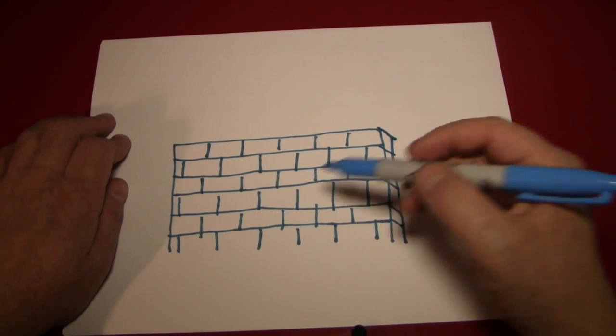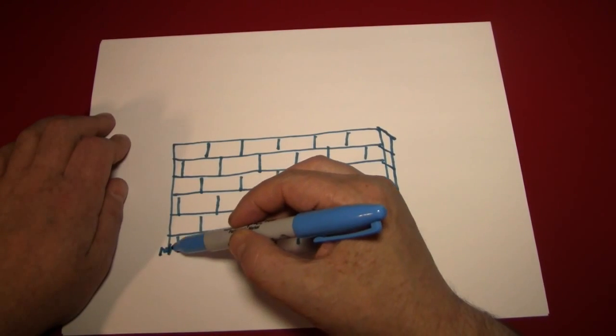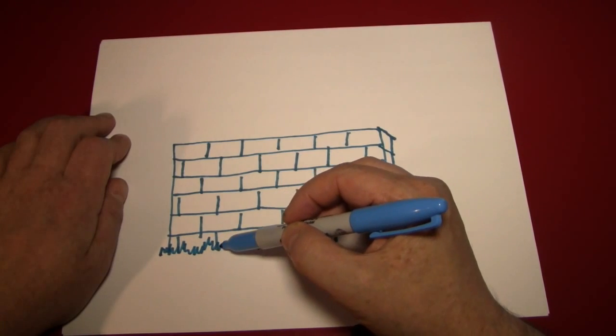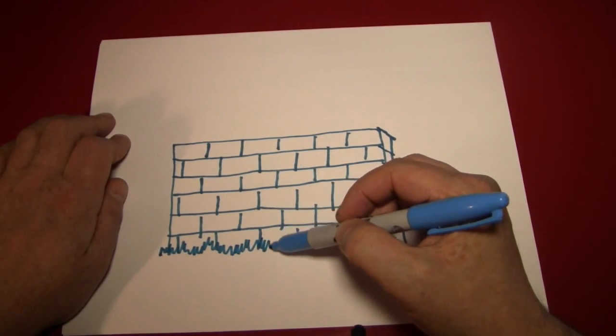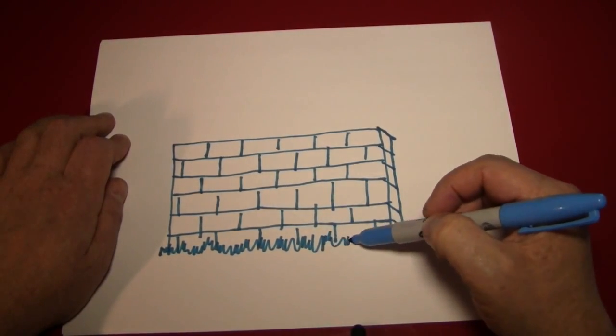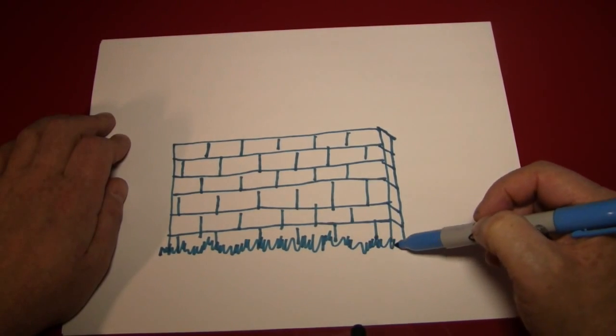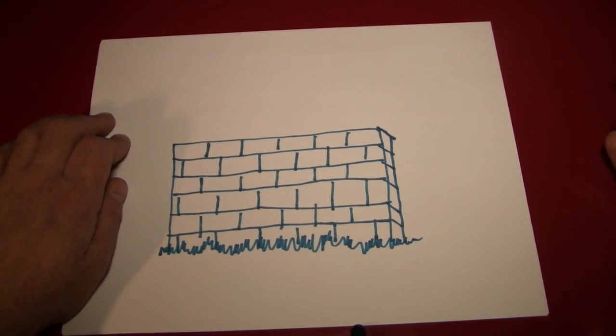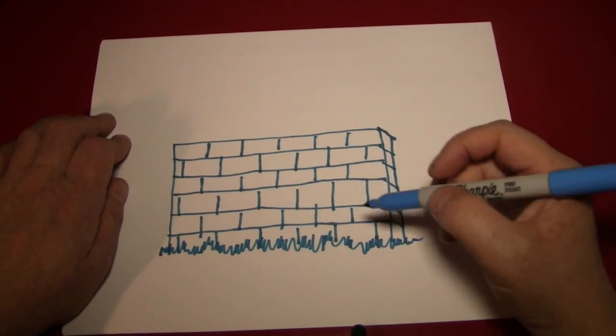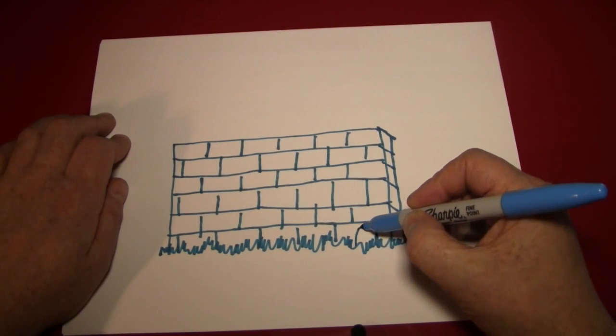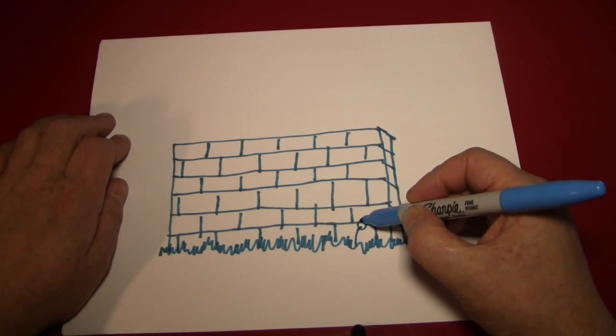A nice thing we can do at this point is draw a little bit of grass at the bottom of this brick wall. Just like we did with the tree and the mushroom, this gives the brick wall a place to be. You can even draw a little flower if you want by drawing a little line in a circle.